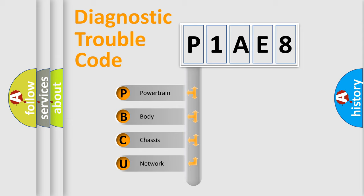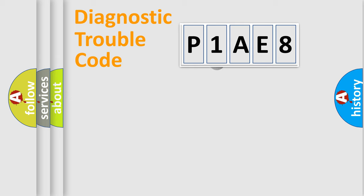We divide the electric system of automobile into the four basic units: Powertrain, body, chassis, network. This distribution is defined in the first character code.